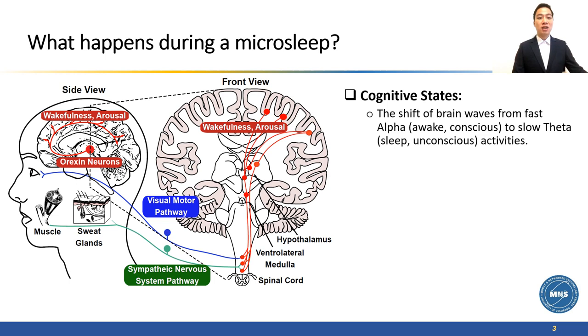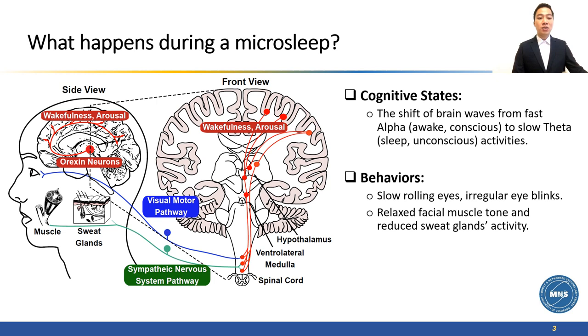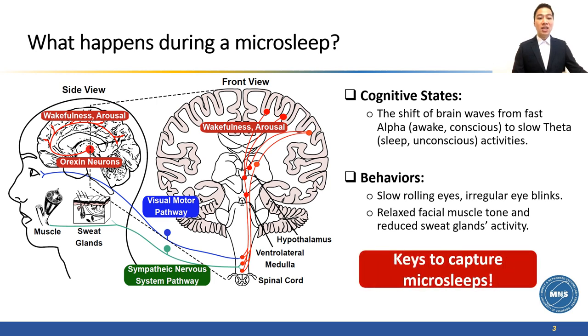In terms of cognitive state, there are shifts of brainwaves from wakeful alpha activity to slower theta activity which represents sleep. In behavior term, there are slow rolling eyes, irregular eye blink, relaxed facial muscle tone, and reduced sweat gland activity. These are the key biomarkers to capture microsleep.